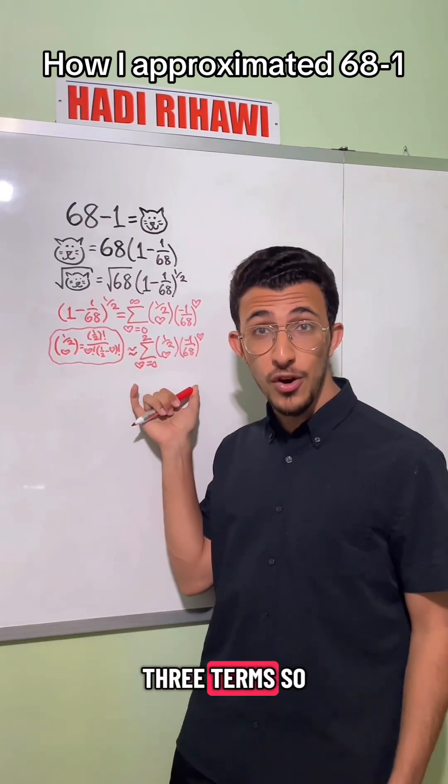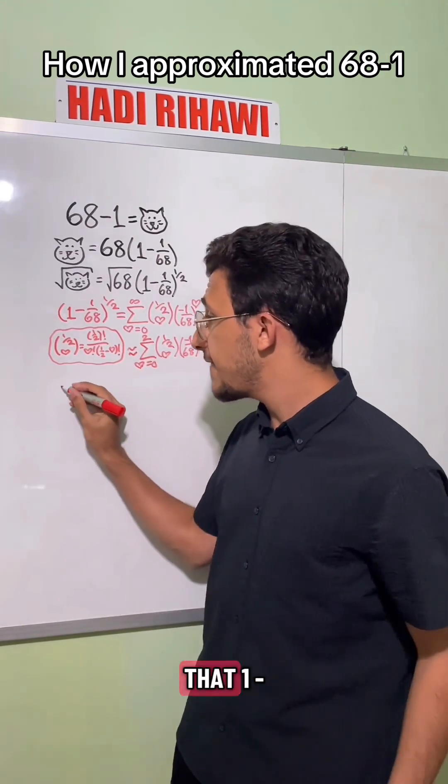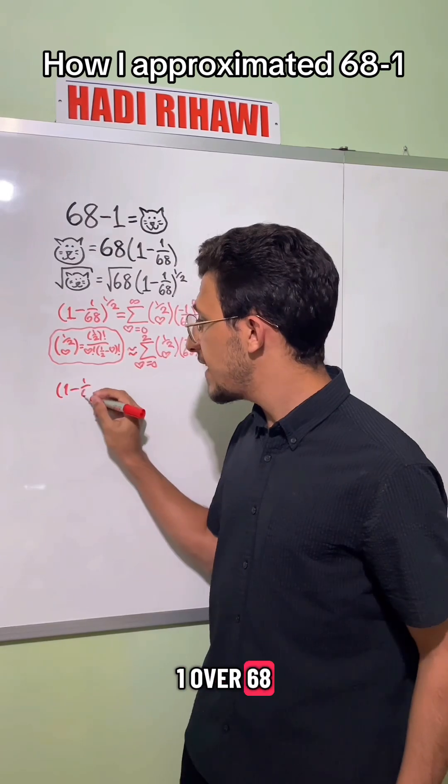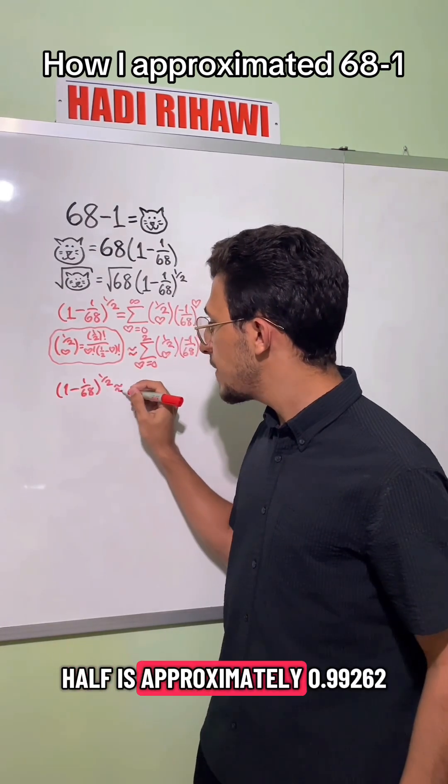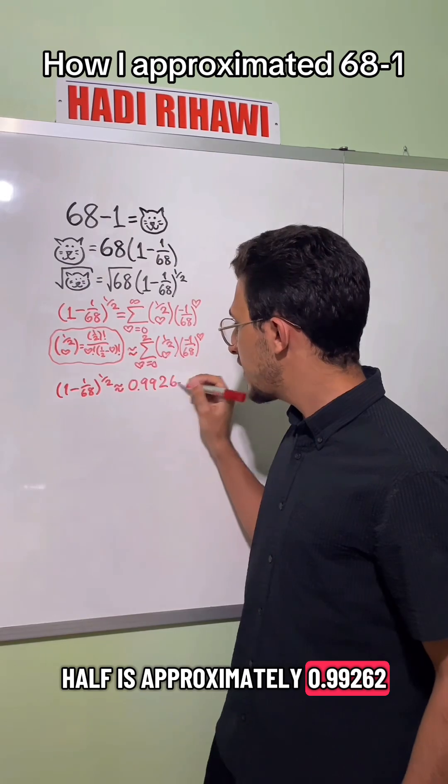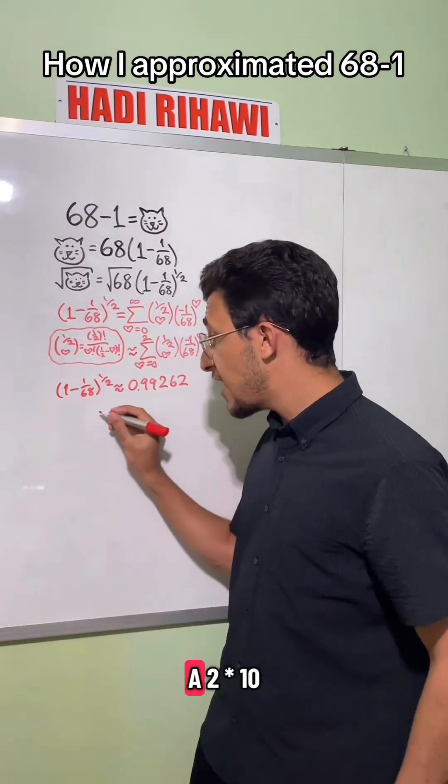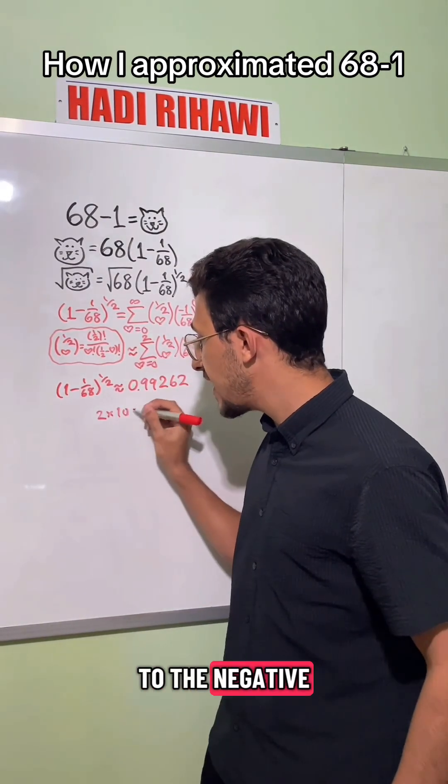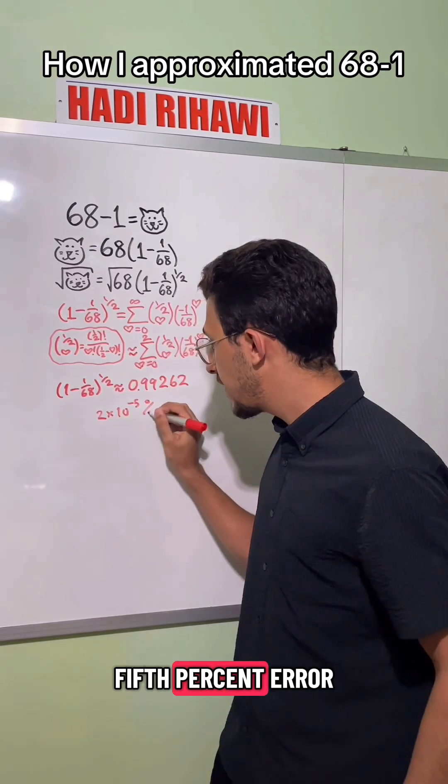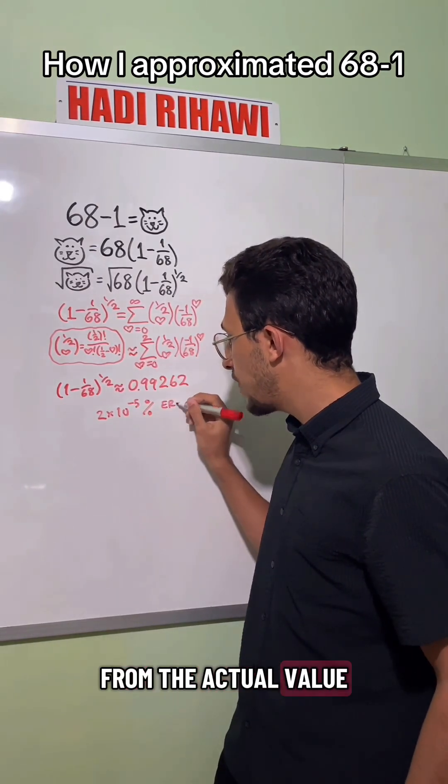This is only 3 terms, so now it's very easy to compute, and we have that 1 minus 1 over 68 to the 1 half is approximately 0.99262, which is about a 2 times 10 to the negative 5th percent error from the actual value.